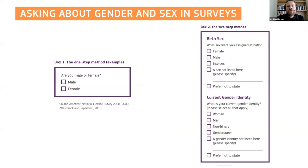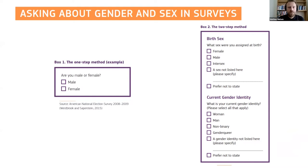As part of recent updates to the Gendered Innovations project, a method was also developed outlining the state-of-the-art approach for collecting data about sex and gender in surveys. The usual approach is the one-step method shown on the right in the visualization, which conflates sex and gender and leaves no response options for respondents who do not consider themselves male or female. Gender researchers are therefore increasingly relying on the two-step approach, which asks about sex at birth and gender identity in two separate questionnaire items and includes more inclusive response options.